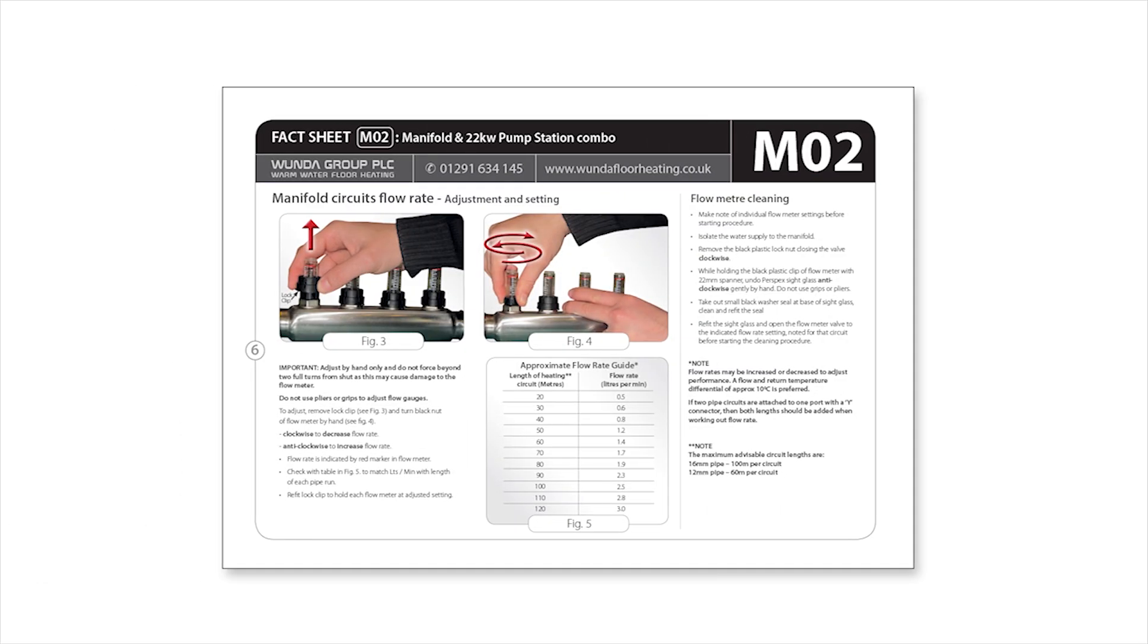Flow rates need to be adjusted to suit the length of pipe in each loop as specified in our MO2 user guide.